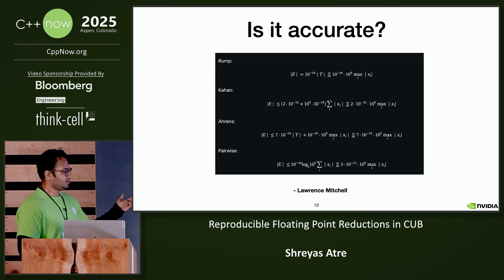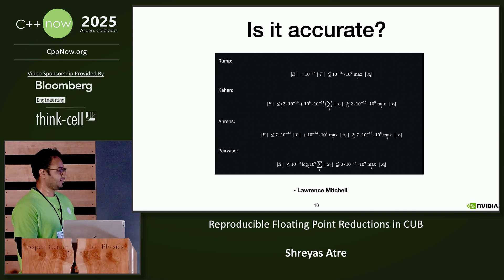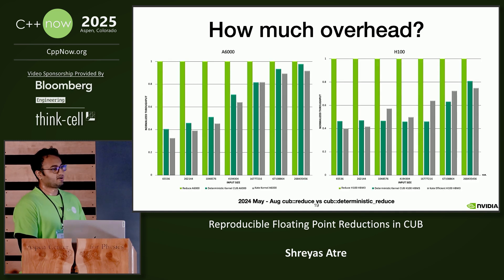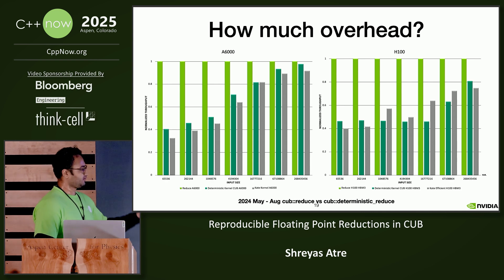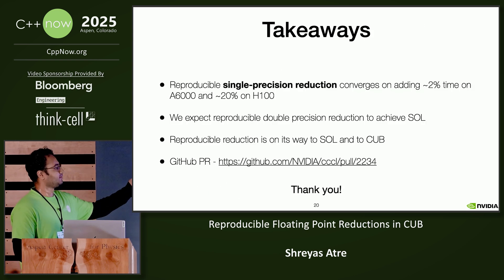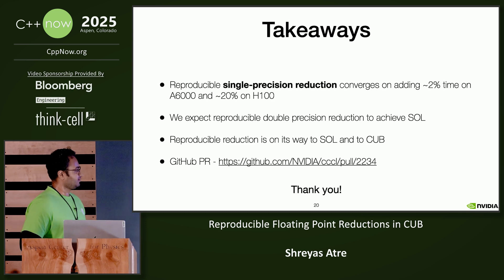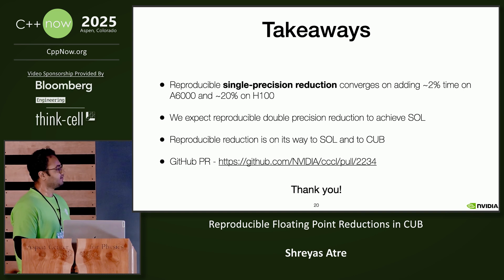This is the error comparison. In simple terms, it means it's 3.5 times worse than Kahan and four times better than pairwise. So how much is the overhead when you use this kind of algorithm? In CUB, we consider reduce to be speed of light, so we normalized all the algorithms according to that. We got around 2% overhead on A6000 and 20% on H100. And reproducible summation is on its way to speed of light and into CUB.